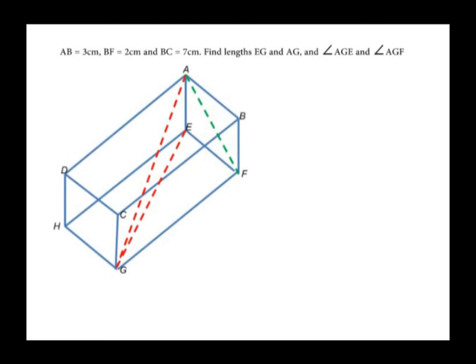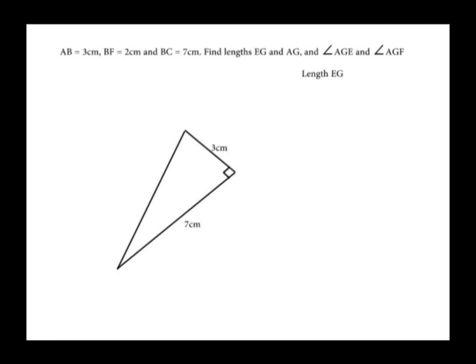First, the length EG. EG is the diagonal of the bottom rectangle. Being a rectangle, the angle at F — that is, angle EFG — is 90 degrees. So EG is the hypotenuse of triangle EFG. Using Pythagoras' theorem, EG squared equals 3 squared plus 7 squared. Taking the square root of both sides, EG equals 7.62 cm.